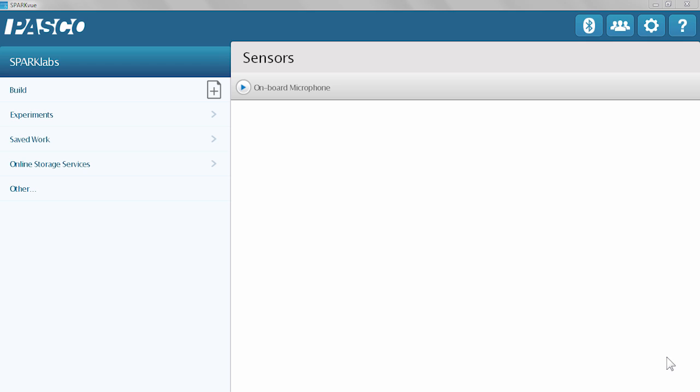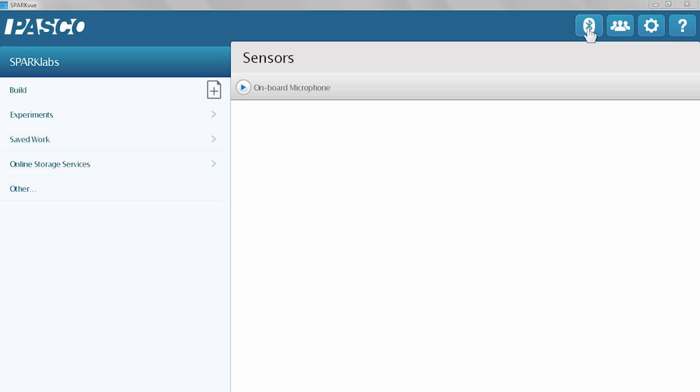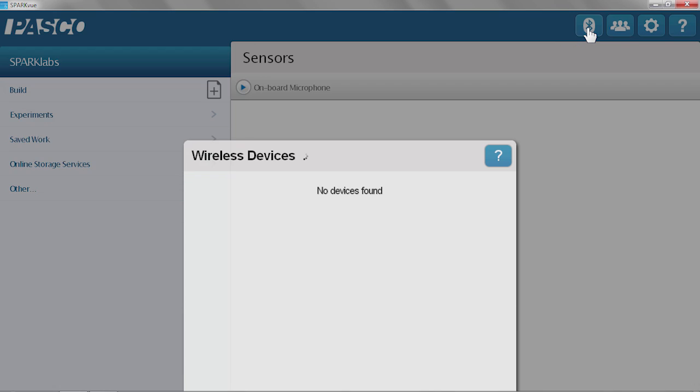So now I'm going to go into our software. I'm using SparkVue software. And since it is a BLE device, I can pair right in the application. I'm going to hit the Bluetooth icon.